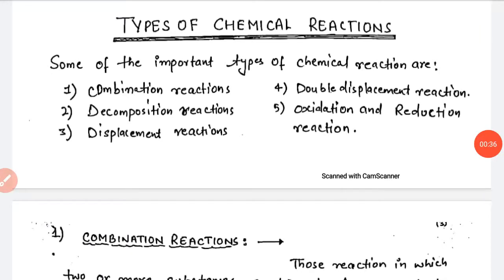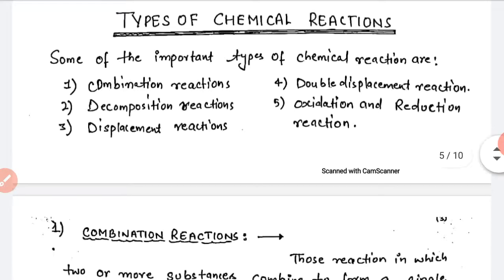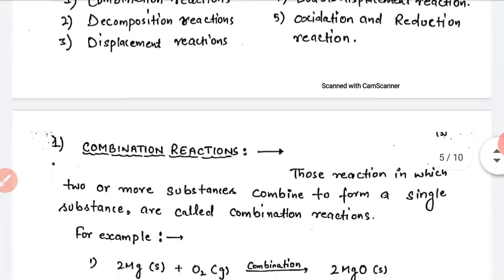Today we will discuss the types of chemical reactions. There are some important types: first is combination reaction, second is decomposition reaction, third is displacement reaction, fourth is double displacement reaction, and fifth is oxidation and reduction reaction. So let's read these types of reactions one by one.